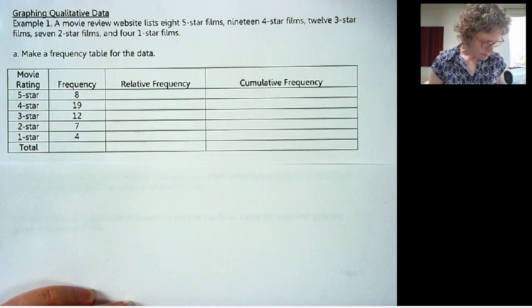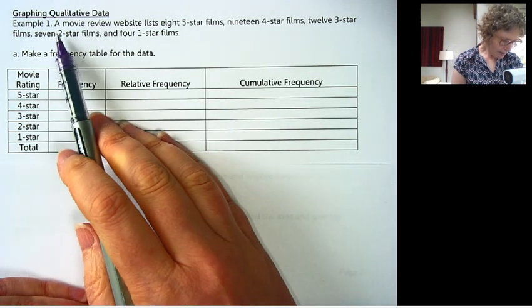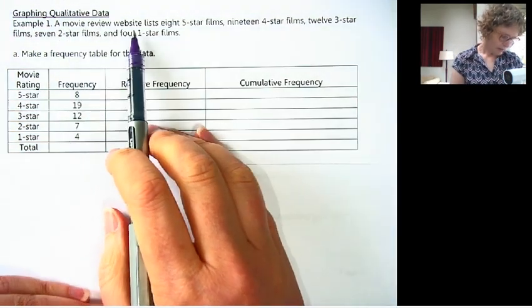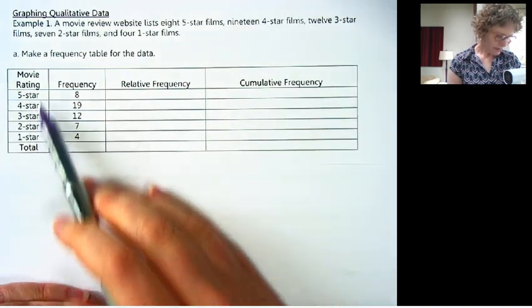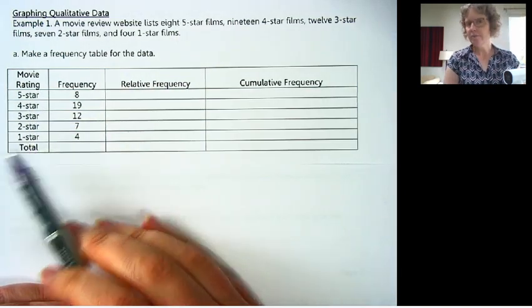And let's look at an example here. So we have a movie review website, and they're listing the number of stars that a movie has, and how many of each.